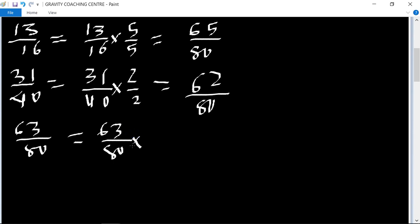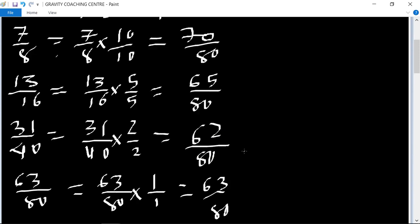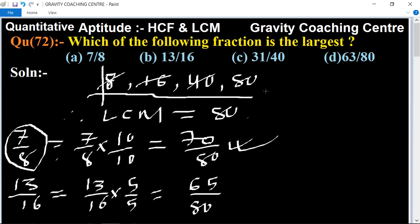So which one is the bigger? Here 70 upon 80 is the largest fraction. So 7 by 8 is the largest fraction. Therefore option A is the right answer.